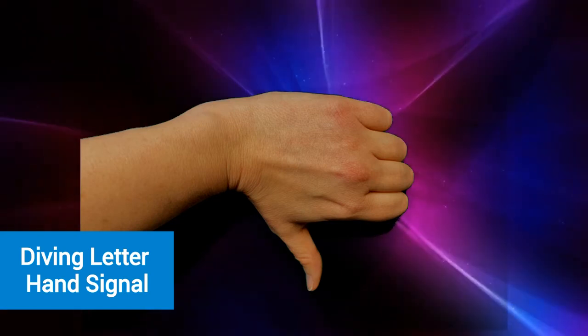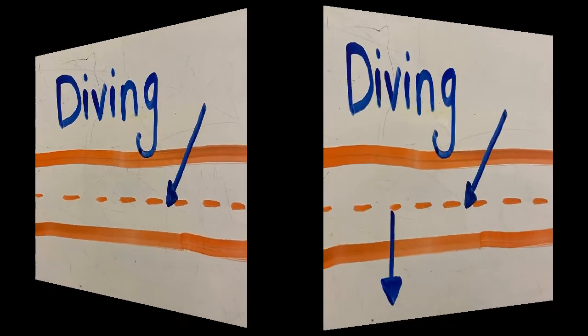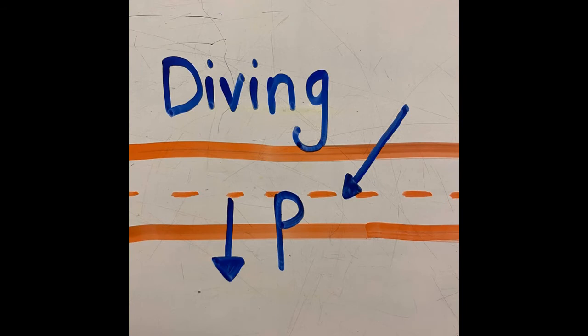Diving letters start on the dotted line. They dive down past the bottom line. P is a diving letter.